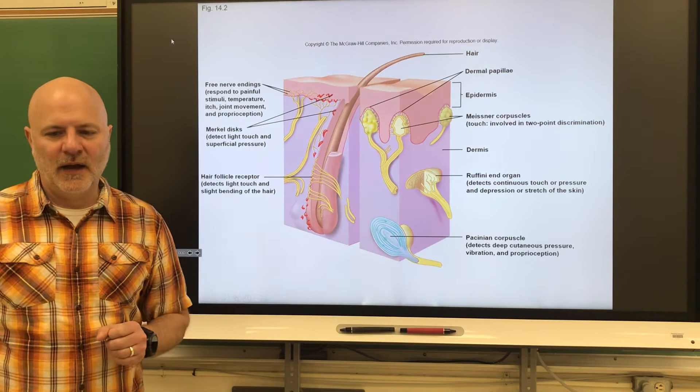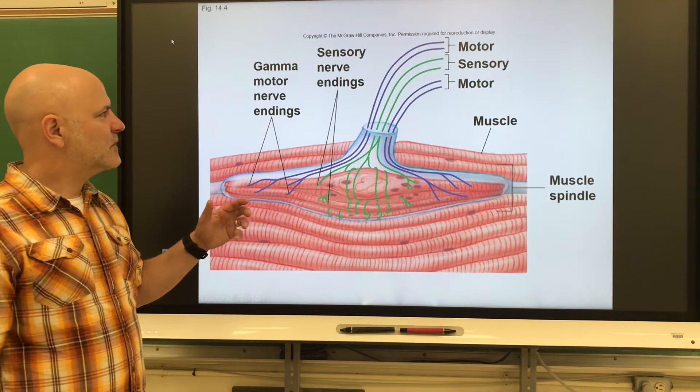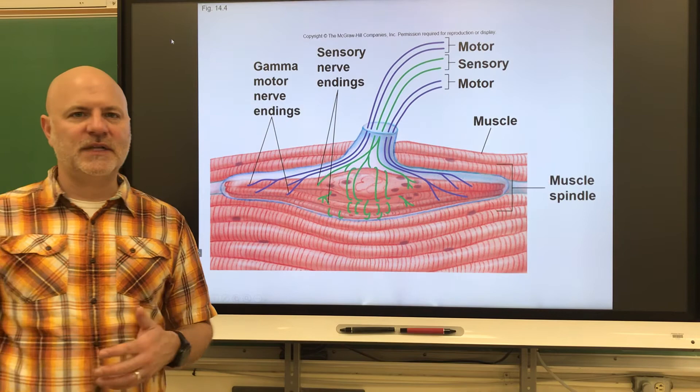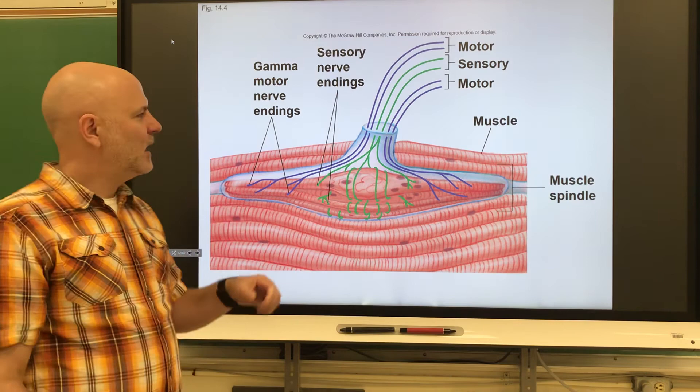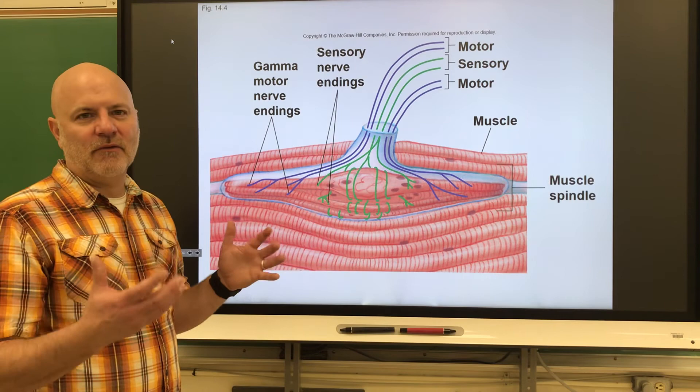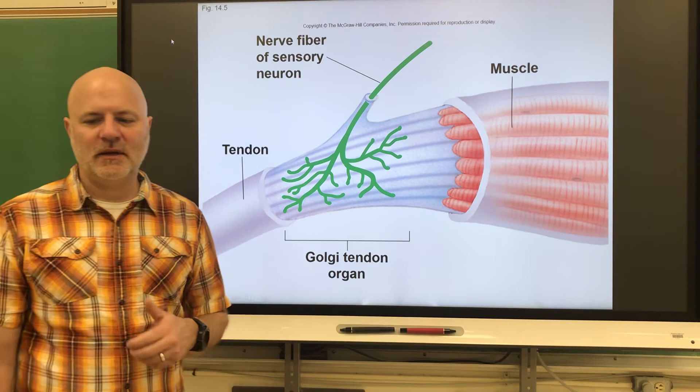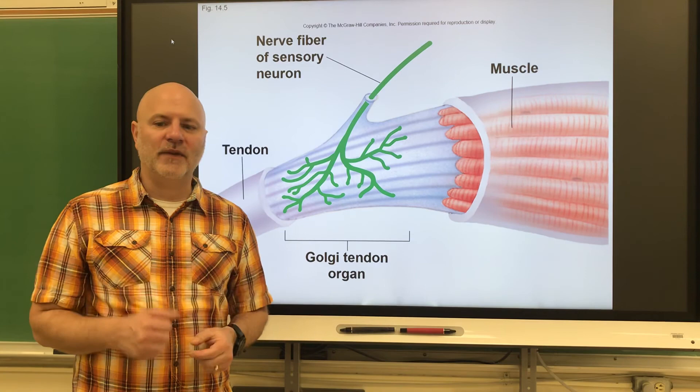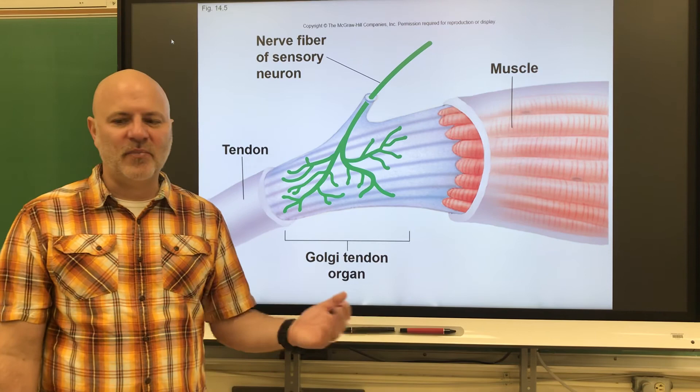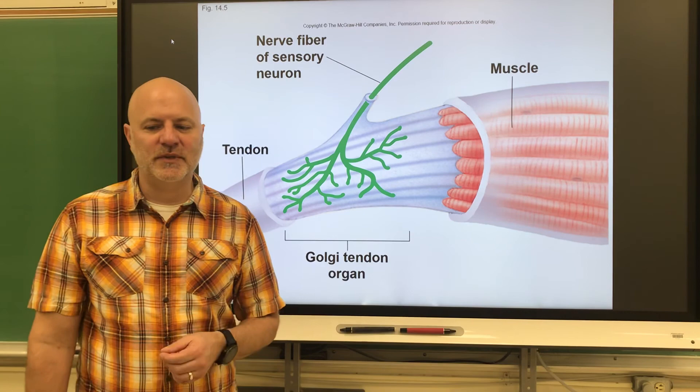Next are muscle spindles, located in the perimysium of skeletal muscles. These detect muscle stretch, letting us know how far a muscle is stretching during contraction. Then there are Golgi tendon organs found in tendons that detect tendon stretch — we talked about these when discussing the related reflex. Lastly are joint kinesthetic receptors, which monitor stretch in synovial joints and provide information on joint position and motion. And that's it for Chapter 14.